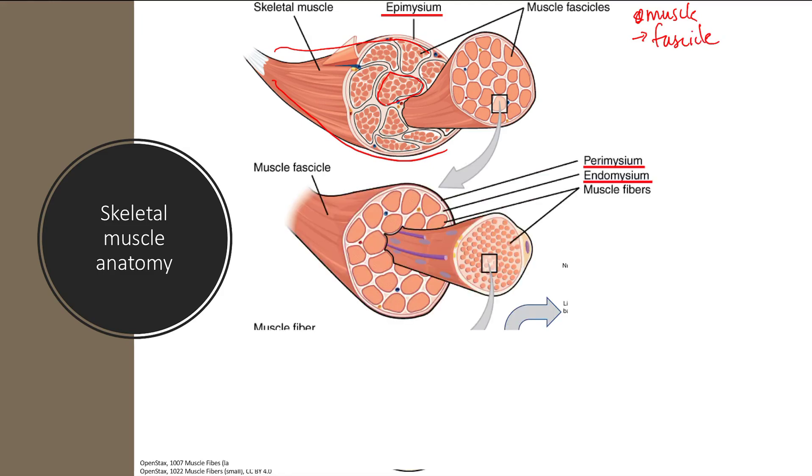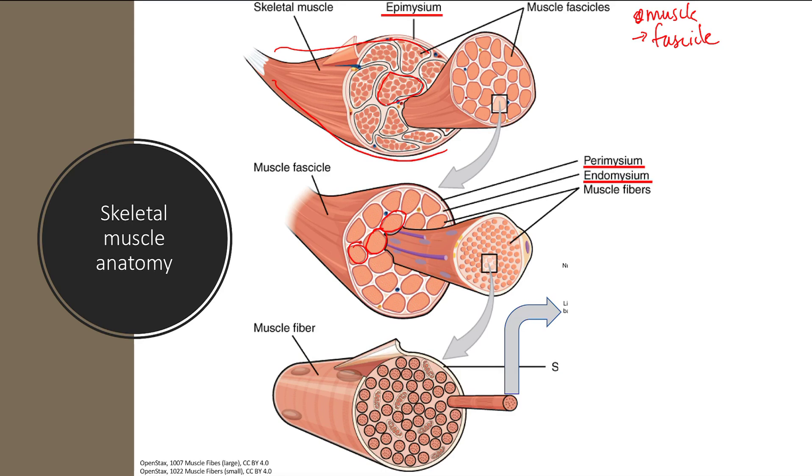So now I'm going to look at this fascicle. A fascicle is made up of many muscle fibers. A muscle fiber is another word for a muscle cell. A muscle fascicle is surrounded by perimysium, and the muscle fibers are surrounded by endomysium. So a muscle fascicle has muscle fibers made up - muscle cells.